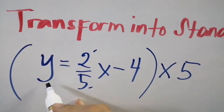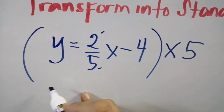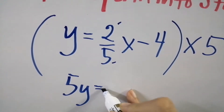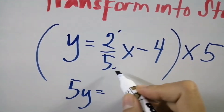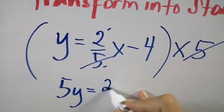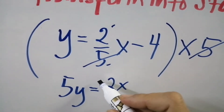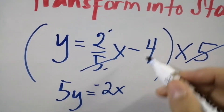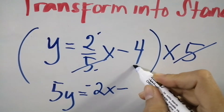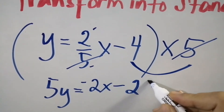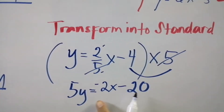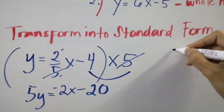Now, y multiplied by positive 5 gives you 5y. Then 2/5x multiplied by 5 — cancel out the denominator and bring down 2x. Change the positive sign to a negative sign, bring down the negative sign, and multiply 4 by 5, which gives you negative 20. So we now have 5y equals 2x minus 20.